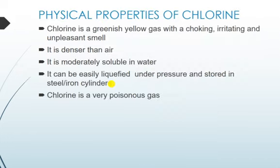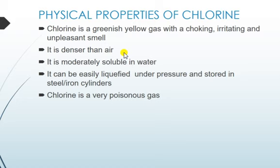The chlorine gas collected is then liquefied and stored under pressure in steel cylinders. Now, briefly, the physical properties of chlorine: chlorine is a greenish yellow gas with a choking, irritating, and unpleasant smell. Chlorine is denser than air — it has a higher density than air. It is also moderately soluble in water, and as mentioned under industrial preparation, chlorine can be easily liquefied under pressure and stored in steel or iron cylinders.